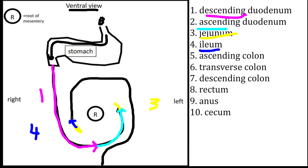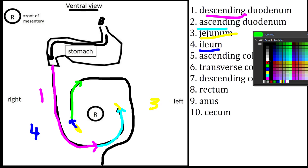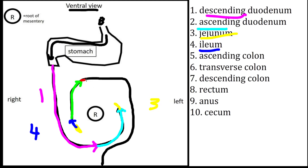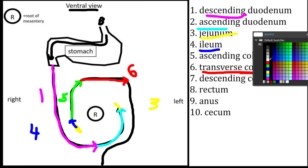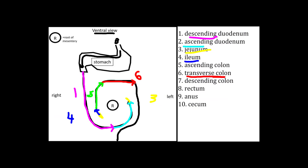The next structure we'll draw will be the ascending colon, which heads cranially to the right of the root of the mesentery. We'll continue with the transverse colon, which heads from animal right to animal left, cranial to the root of the mesentery. So structure five is the ascending colon and six is the transverse colon.